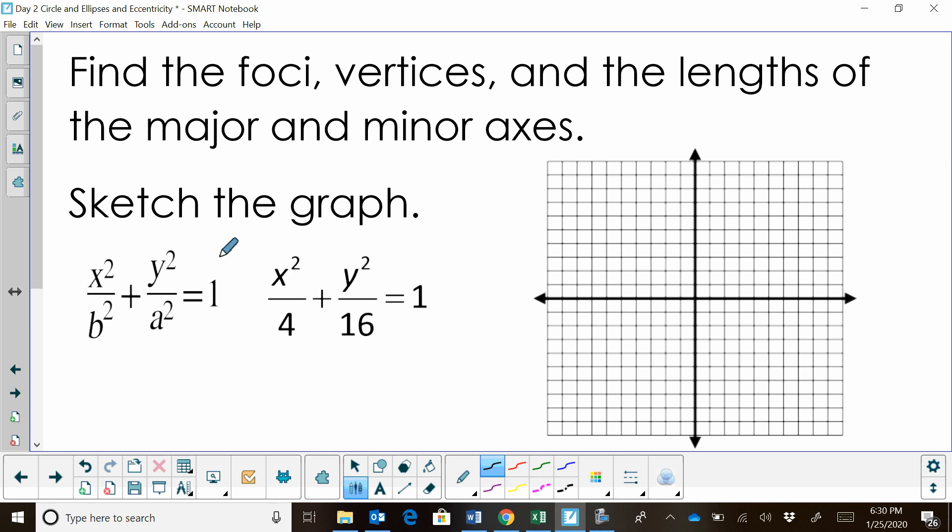This one has the center still at the origin because we don't have a value added to x or y in this equation, but we do have a squared underneath the y value. Let's look at the equation. We have x squared over 4 plus y squared over 16 equals 1.